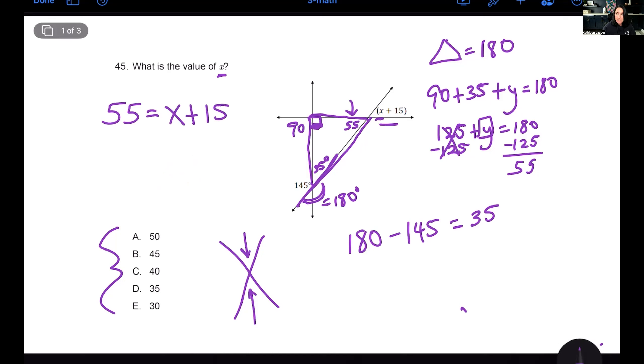Because 55 plus 35 plus 90, let me just check my math. 90 plus 55 plus 35 equals 180. So now I need to use my knowledge of vertical angles. When you have these two angles, they cross at that point, they're called vertical angles. And these two angles are equal to each other. So in this case, 55 equals x plus 15.